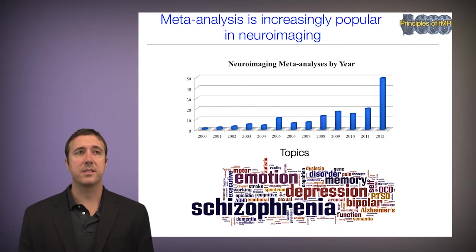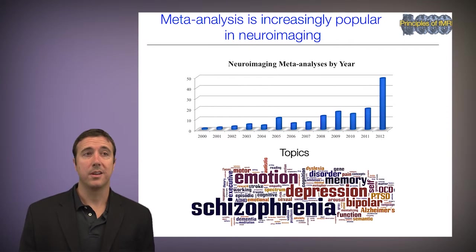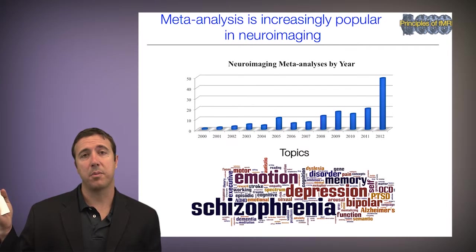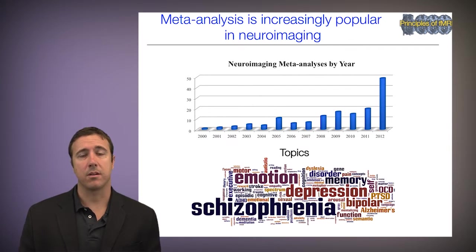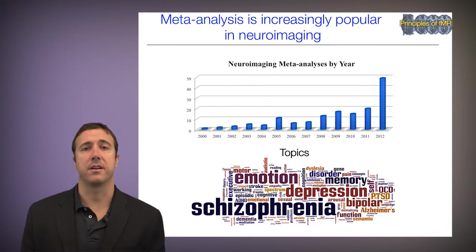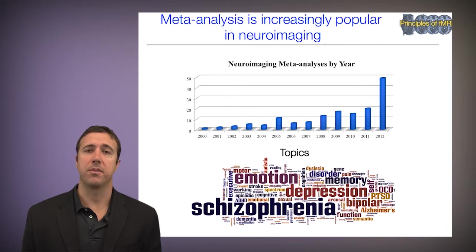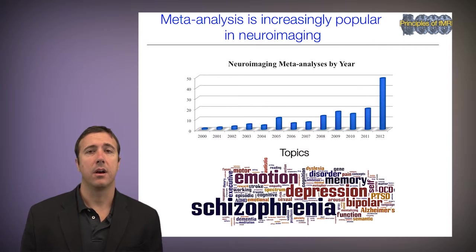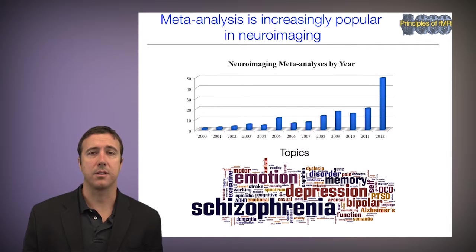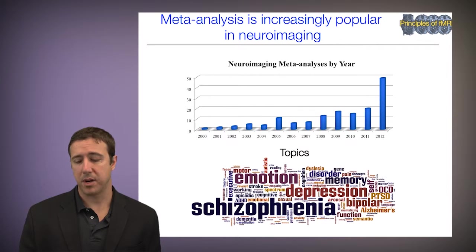Meta-analysis is increasingly popular. The number of meta-analyses has been going up across the years, in part as a response to the huge number of studies coming out and the need to synthesize and interpret findings. Topics of meta-analysis, as you can see below, range from things like schizophrenia, depression, emotion, various disease categories, and various kinds of basic cognitive processes.